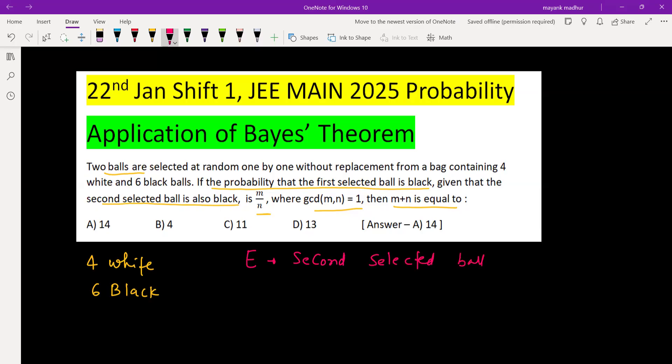This can be two ways. If the first ball is black, let's call an event E1 first selected ball is black and E2 is an event that first selected ball is white.